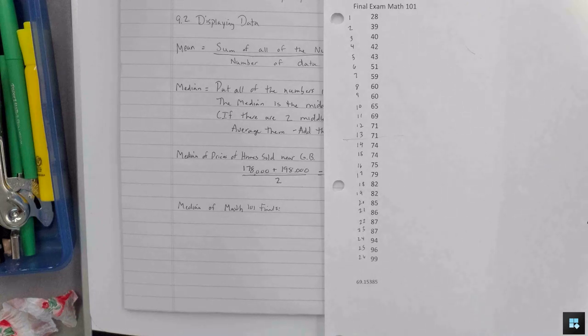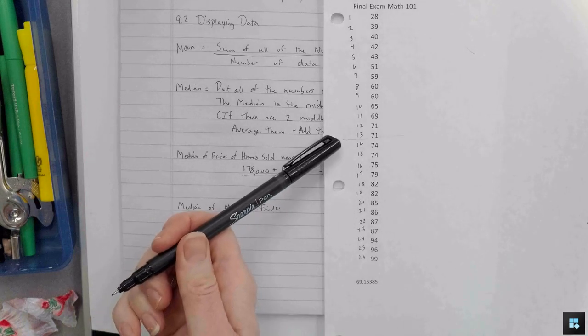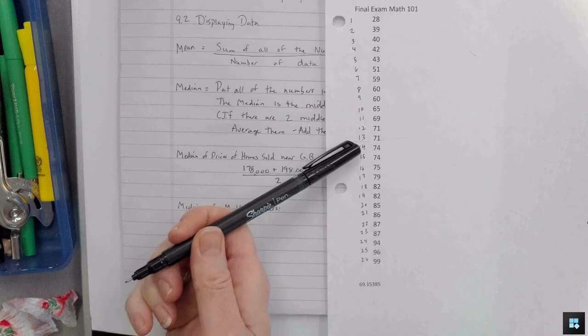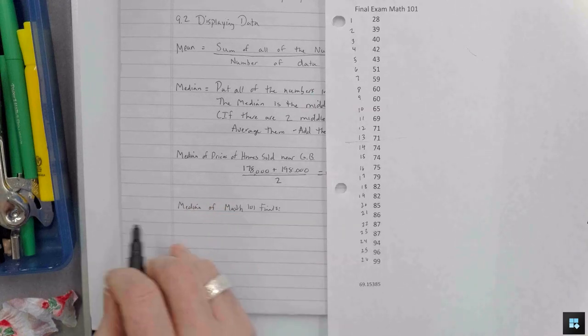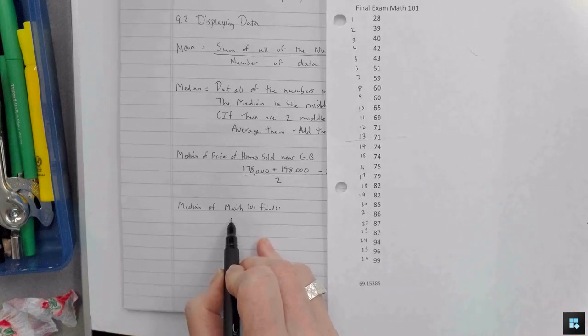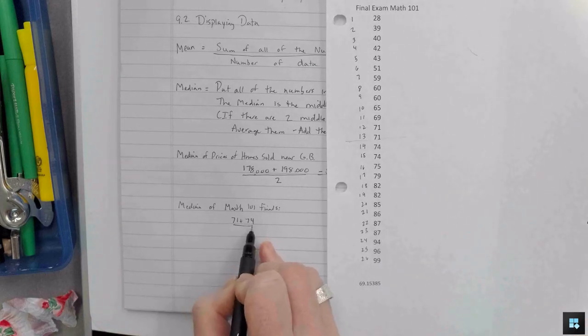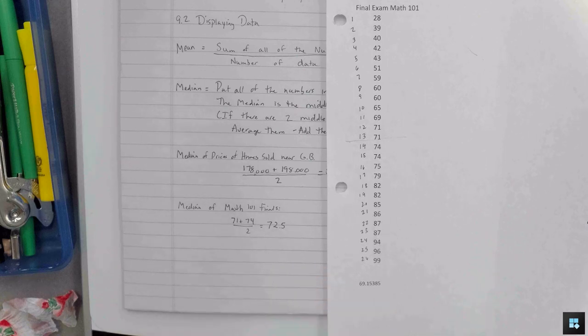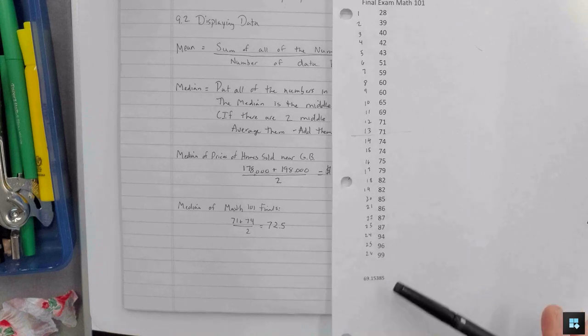So these are numbered as well. There's 26. So you see there's a line drawn in the middle. There's 13 grades above that line and there's 13 grades listed below that line. So since there's not a middle grade, you would take the 71 and 74, the two middle grades, and average them. Did anybody else get 72.5? Okay, thank you. So that was higher than the 69.15. Does anybody know why the median was higher?